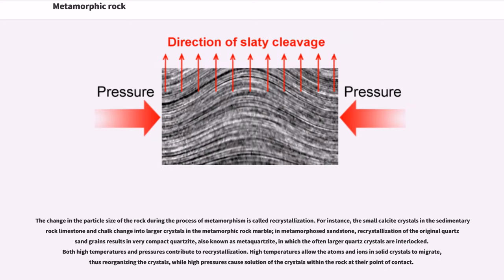The change in the particle size of the rock during the process of metamorphism is called recrystallization. For instance, the small calcite crystals in the sedimentary rock limestone and chalk change into larger crystals in the metamorphic rock marble. In metamorphosed sandstone, recrystallization of the original quartz sand grains results in very compact quartzite, also known as metaquartzite, in which the often larger quartz crystals are interlocked.